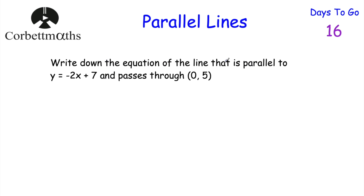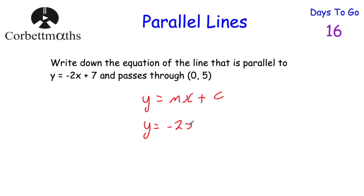The next question says: write down the equation of a line that's parallel to y equals minus 2x plus 7 and passes through the point 0, 5. Again, feel free to press pause. This is quite a nice one because 0, 5 is the y-intercept — it's 5 on the y-axis. The equation is in the form y equals mx plus c. Its gradient would have to be minus 2 because it's parallel to this line. So it's going to be y equals minus 2x, and it crosses the y-axis at 5, so plus 5. The equation of the line is y equals minus 2x plus 5.